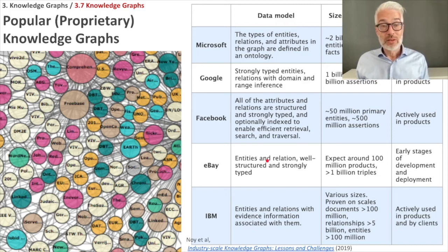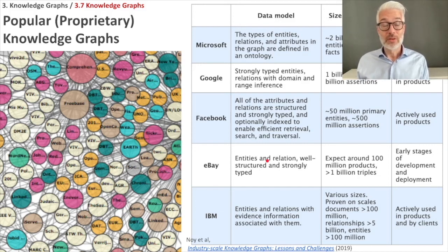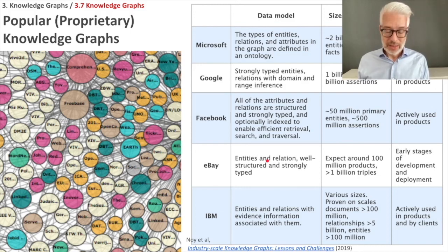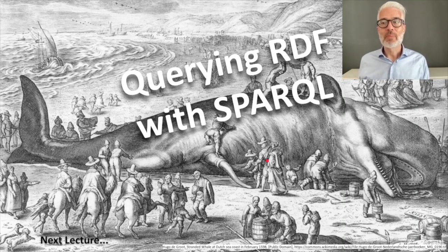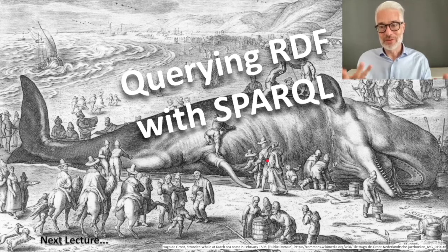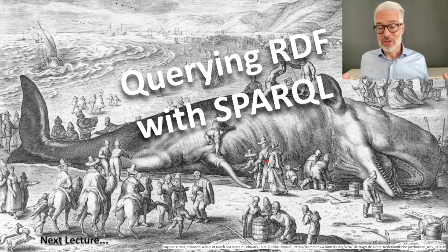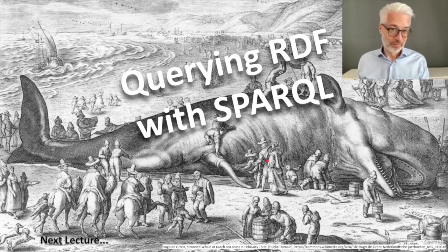You cannot directly access proprietary knowledge graphs, but there are open knowledge graphs on the web. In the next lectures we will look especially at DBpedia and Wikidata as two popular open knowledge graphs, and importantly at the SPARQL query language, which enables us to query a gigantic knowledge graph like Wikidata and extract exactly the data we are looking for.